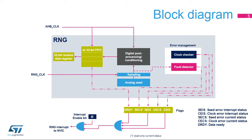Status bits are set and an interrupt is triggered if an abnormal sequence is detected in the seed or if the RNG frequency is too low. The RNG frequency error check must be disabled if the RNG clock is fixed below AHBCLK/32 — for example, for quality reasons.